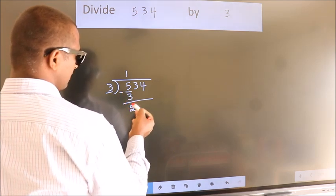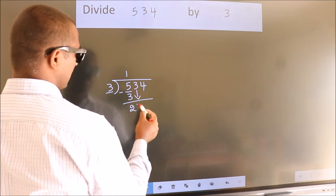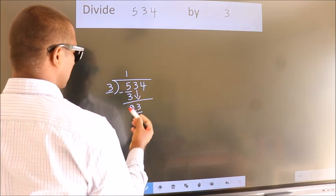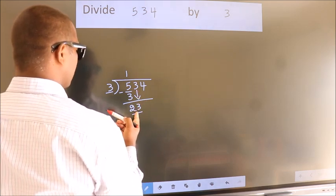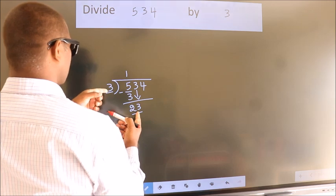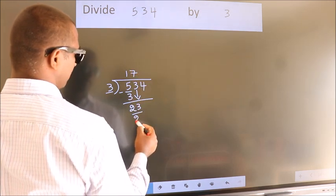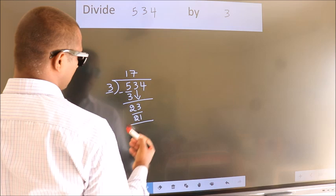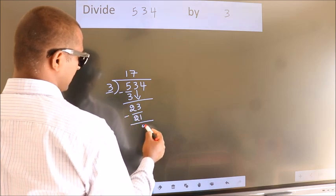After this, bring down the next number, so 3 down, so 23. A number close to 23 in the 3 table is 3 sevens, 21. Now we subtract, we get 2.